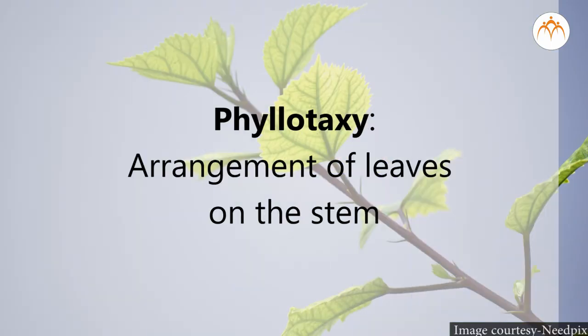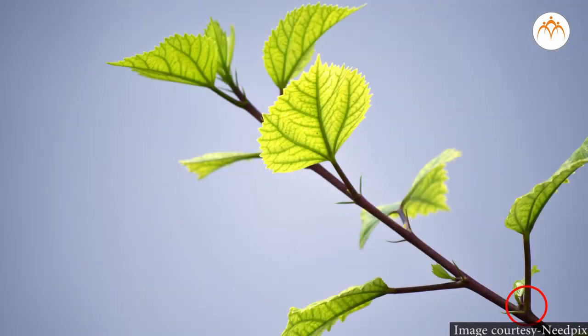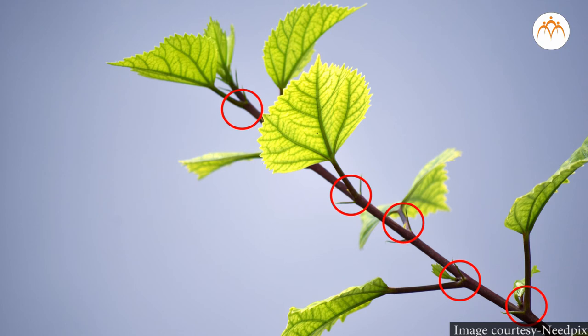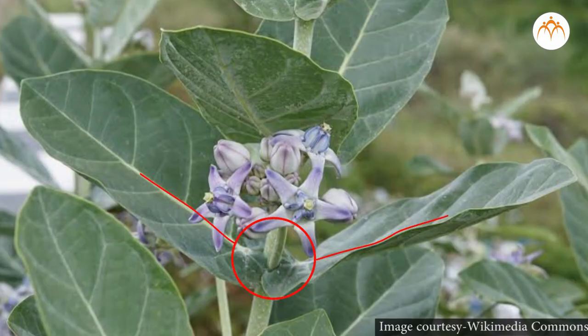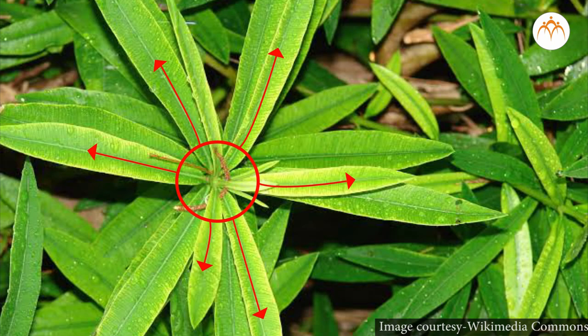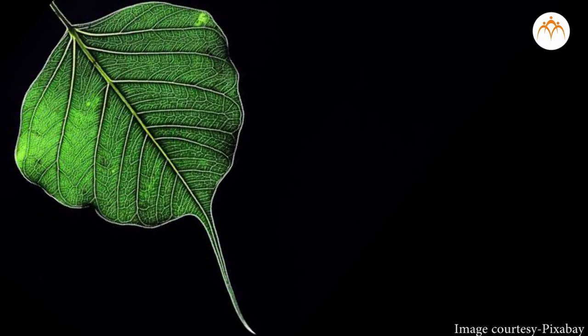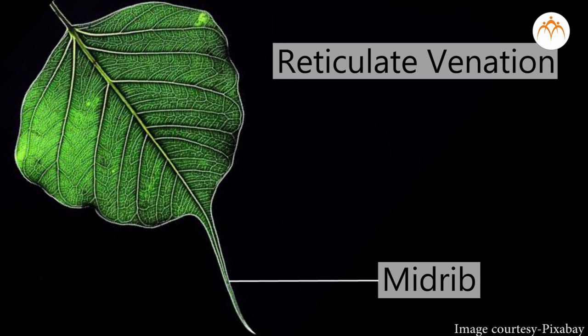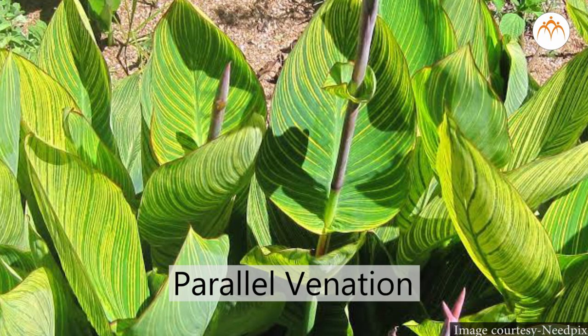Arrangement of leaves on the stem — phyllotaxy: alternate means one leaf at each node, examples are hibiscus and mango; opposite means two leaves at each node, examples are jasmine and calotropis; whorled means more than two leaves at each node, example is nerium. Types of venation: reticulate venation has a network of veins, examples are hibiscus and peepal; parallel venation has veins running parallel to each other, examples are grass, canna, and maize.